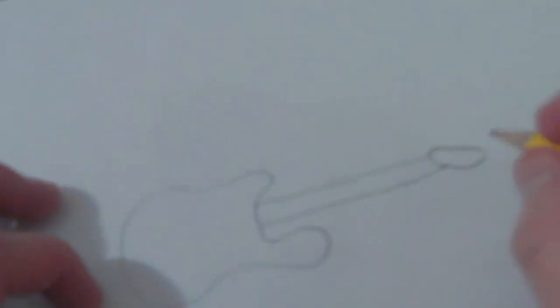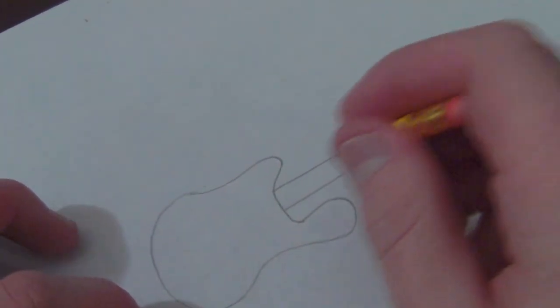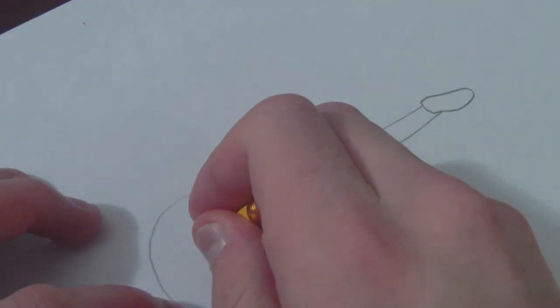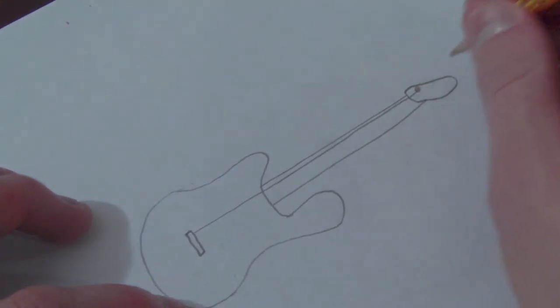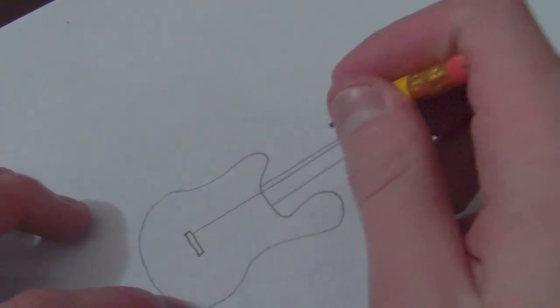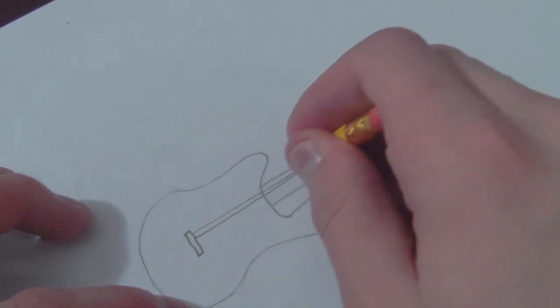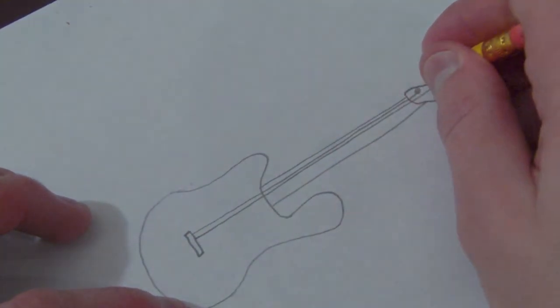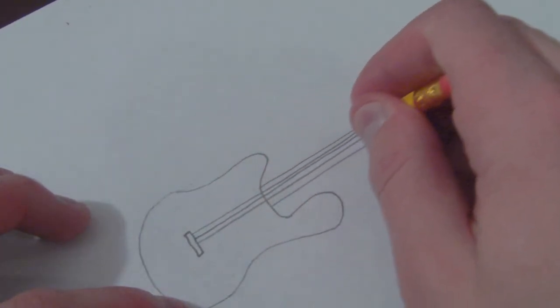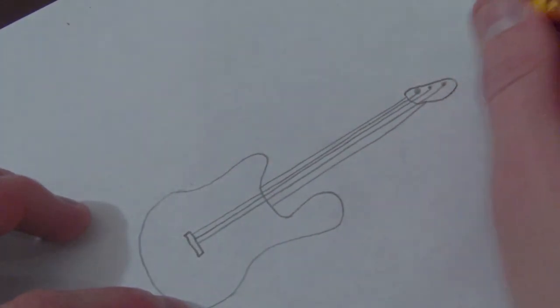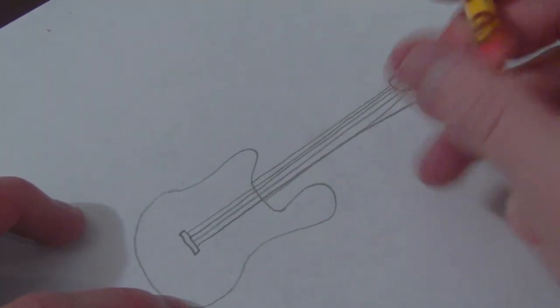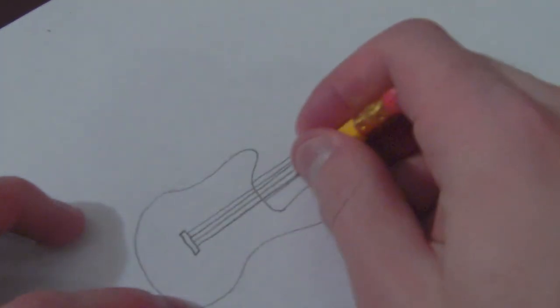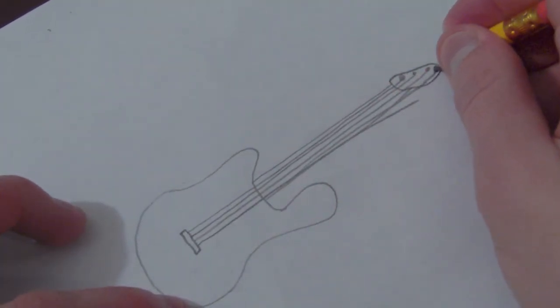So, now we've got the order of the strings here. We've got this nice little block piece down here, and then we've got the strings going up all the way up here to a little tuning thing on the top. Another string. Alright. Another one. Okie dokie. And another one.